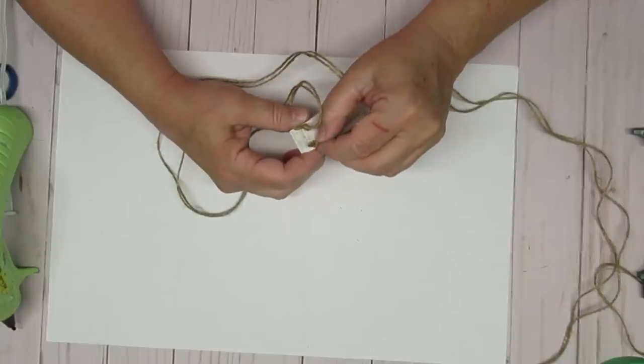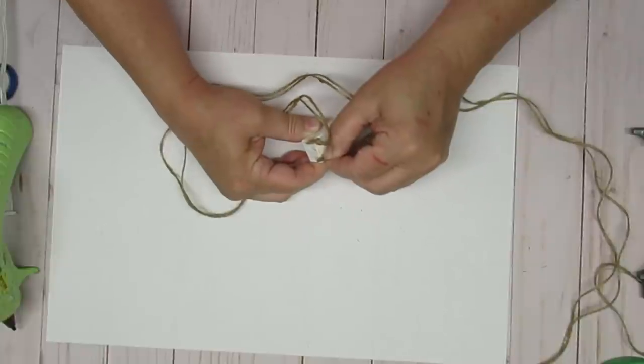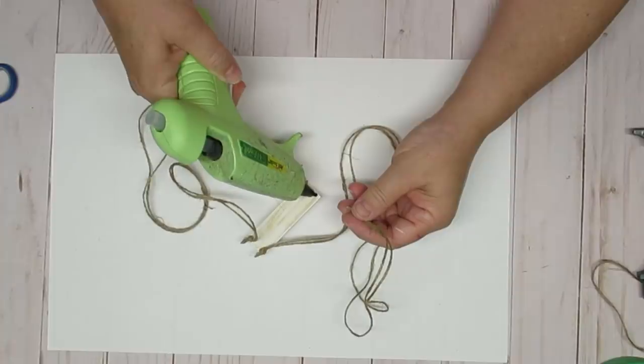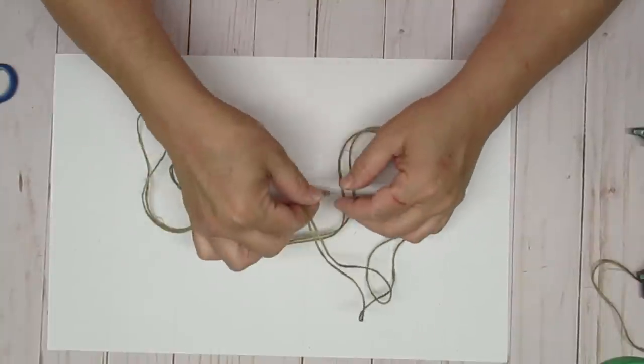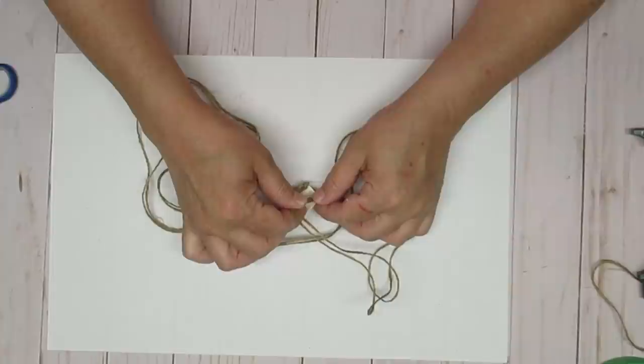I'm going to do the same thing on the other side with the other strand and this project is done. Stick around to the end of the video where I show you how to style this on your tiered tray. I'm going to add a little bird to mine.